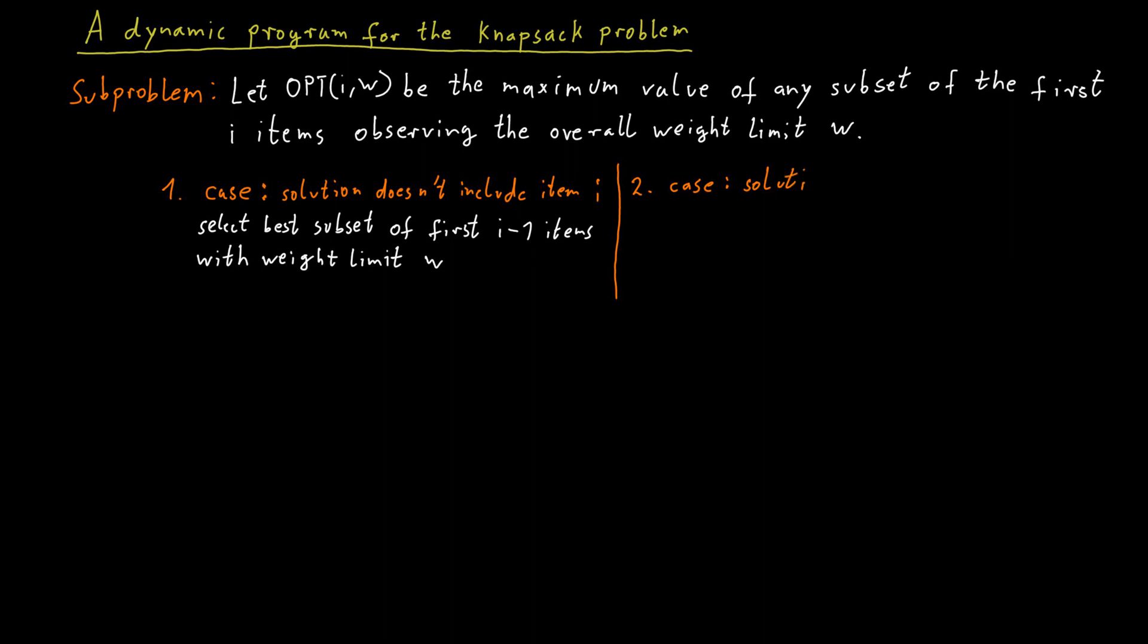The second case is that we do pack item i in our knapsack. In that case, our weight limit changes because item i has a certain weight. So if the weight limit before was lowercase w, then the new weight limit is the same, but we have to subtract the weight of item i from that. So that's the new weight limit.